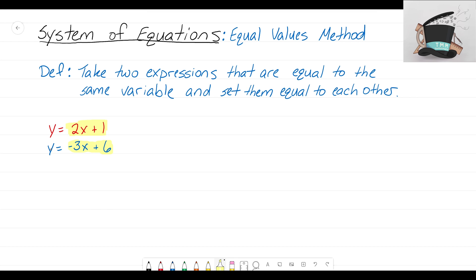Because these two expressions here equal the same variable—they both equal y—then our definition says that we can just set them equal to each other. So that's what I'm going to do here. I'm going to take 2x plus 1 and take negative 3x plus 6 and set those equal to each other.